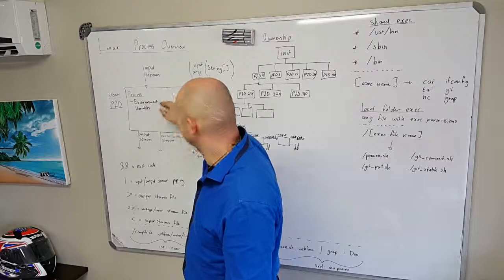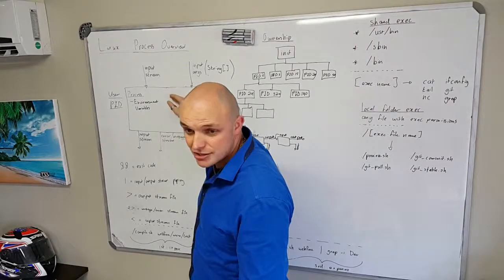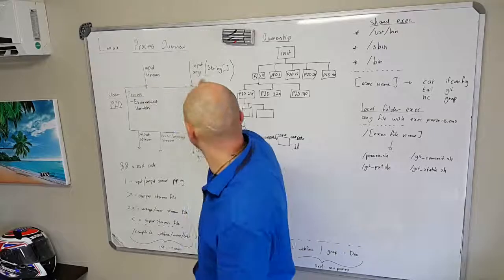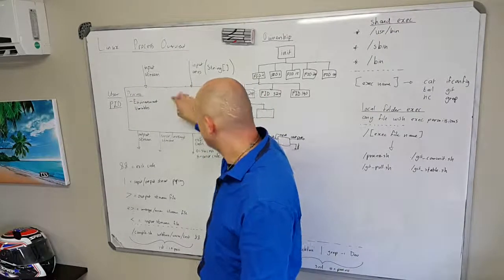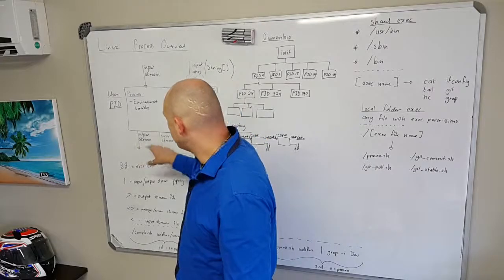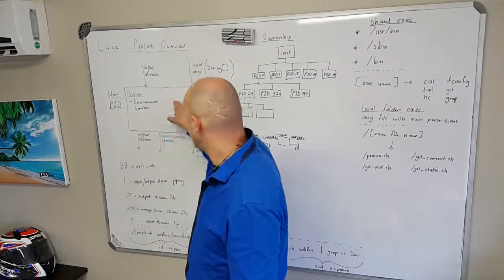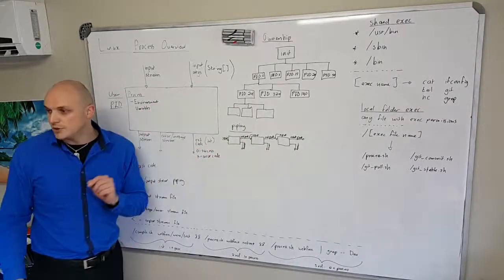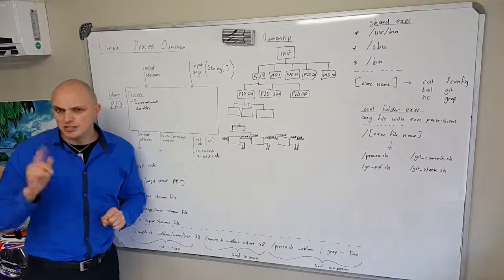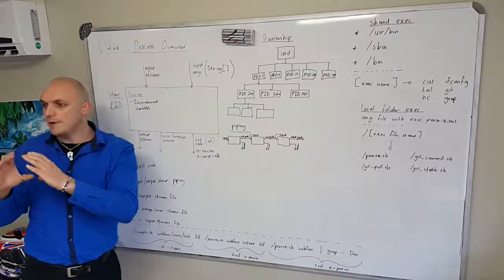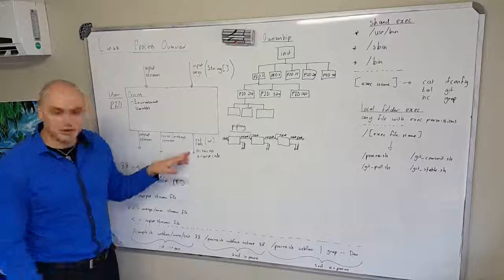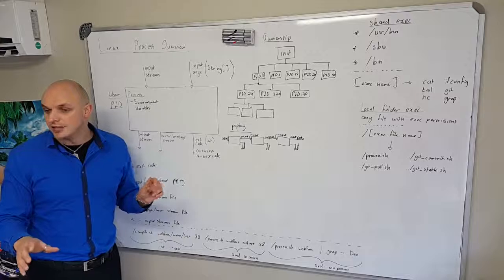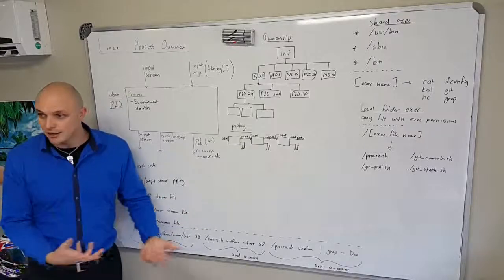So this is the basic idea of what a process is. Inside it there's code executing, threads, environment variables, and memory allocations. The code inside can read input arguments, write to the output streams, and when it wants to terminate it returns an exit code. In Java you can say System.exit() and supply an int parameter as the exit code. It's exactly the same in both Windows and Linux.